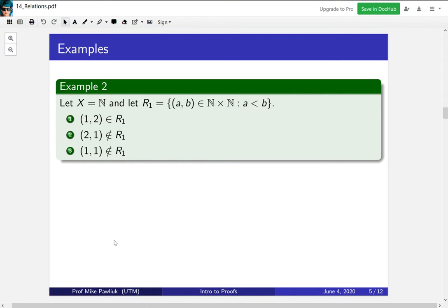Now let's look at some examples that show up more naturally in mathematics. Let's take X to be the set of natural numbers, and let R₁ be the collection of all pairs (a,b) such that a is strictly less than b. In this case, (1,2) is in this relation because 1 is strictly less than 2. (2,1) is not in this relation because 2 is not strictly less than 1. And finally, (1,1) is not in the relation because 1 is not strictly less than 1.